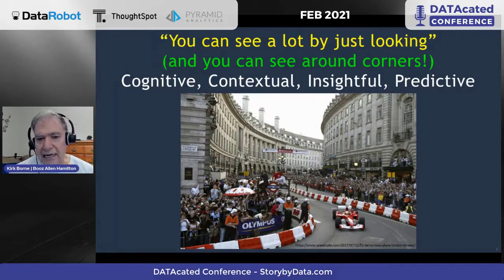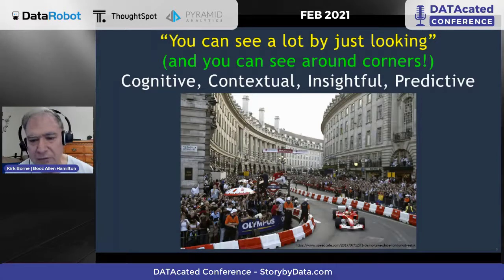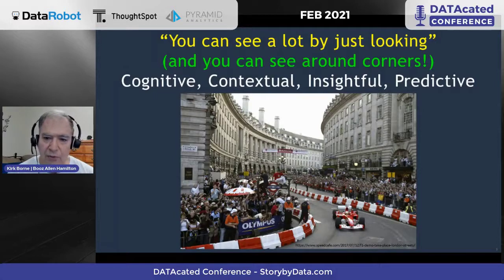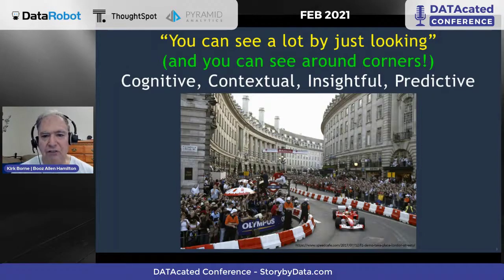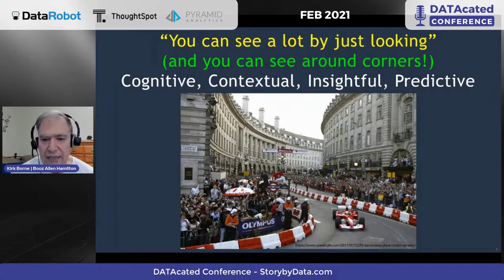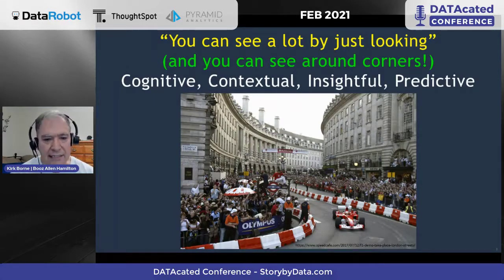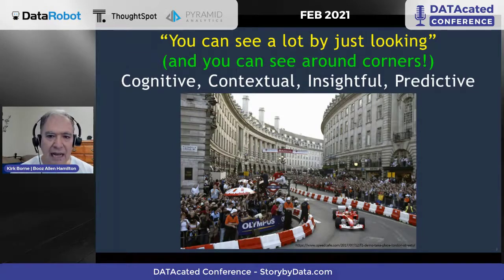He got feedback — he got data from sensors in his environment, which were the crowd. Those sensors could see from their vantage point in the stands on the side of the street — they could see around that corner and see there was a crash. So those sensors were detecting something the driver himself could not see from his low car in the middle of the street. By taking into account all this extra sensor information intuitively, he was able to avoid the crash and win the race. If we use our other data sensors — not just the ones right in front of our face but others in our environment — we can get cognitive and contextual insights, even predictive insights: being able to see around the corner.